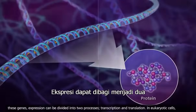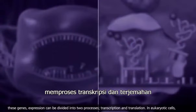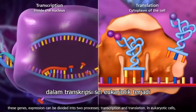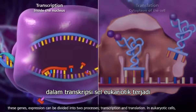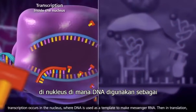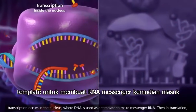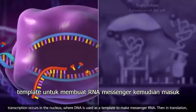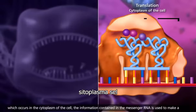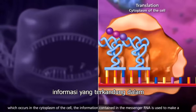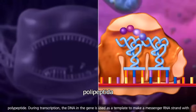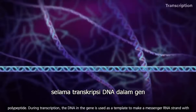For these genes, expression can be divided into two processes: transcription and translation. In eukaryotic cells, transcription occurs in the nucleus, where DNA is used as a template to make messenger RNA. Then in translation, which occurs in the cytoplasm of the cell, the information contained in the messenger RNA is used to make a polypeptide.